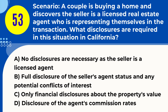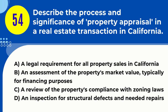Question 53. Scenario: A couple is buying a home and discovers the seller is a licensed real estate agent representing themselves in the transaction. What disclosures are required in this situation in California? A. No disclosures are necessary, as the seller is a licensed agent. B. Full disclosure of the seller's agent status and any potential conflicts of interest. C. Only financial disclosures about the property's value. D. Disclosure of the agent's commission rates. Answer: B. Explanation. In California, when a licensed real estate agent is selling their own property and representing themselves, they are required to fully disclose their status as an agent and any potential conflicts of interest that may arise from this dual role.